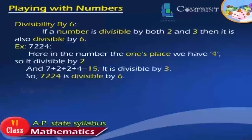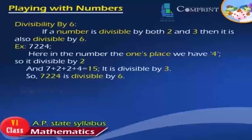Divisibility by 6: If a number is divisible by both 2 and 3, then it is also divisible by 6. Example: 7224 — the ones place digit is 4, so it is divisible by 2. And 7+2+2+4 = 15, which is divisible by 3. So 7224 is divisible by 6.